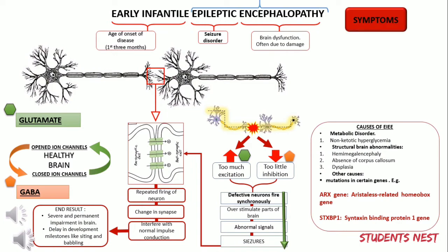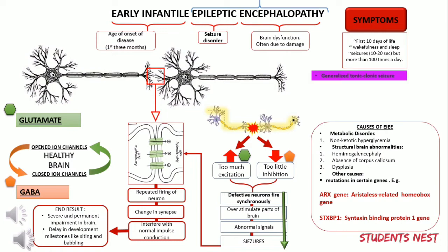Seizures are the most primary outward manifestation of EIEE. Infants are typically presented with seizures within the first 3 months of life, often within the first 10 days. Seizures can occur during wakefulness and sleep, may last about 10–20 seconds, and there may be about 100 seizures per day. They are usually generalized tonic-clonic seizures, meaning the muscles in the trunk and extremities suddenly become stiff and then jerk. Some individuals may also have myoclonic seizures, and other prominent symptoms include intellectual disability and developmental delay.